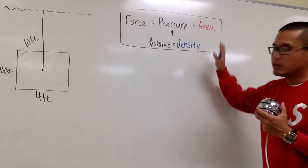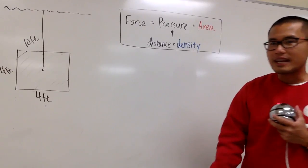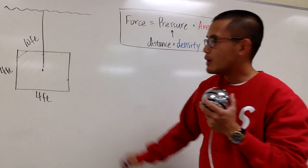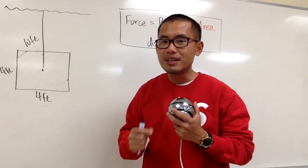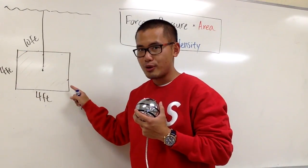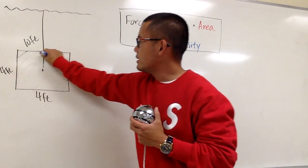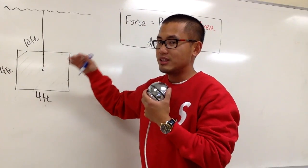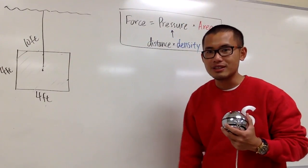We also have to care about the distance — how far down we are underneath the water. Don't get excited and just say 4 times 4 is 16, because for this kind of question we have to use horizontal slices. The pressure up here is very different than the pressure down here, so we consider horizontal slices, find the hydrostatic force for each slice, and add them up using integration.